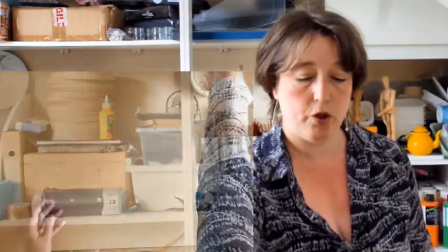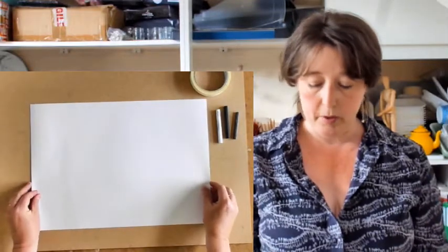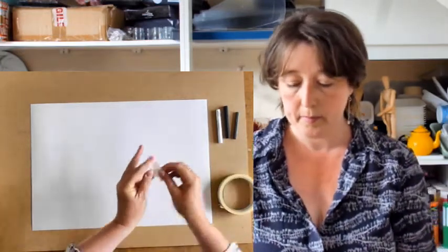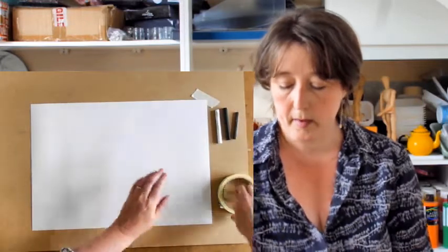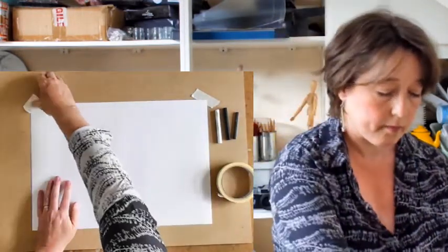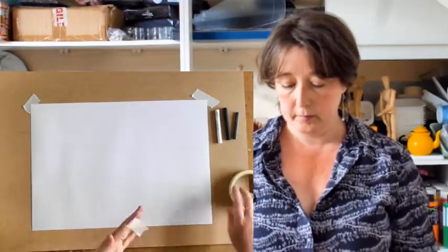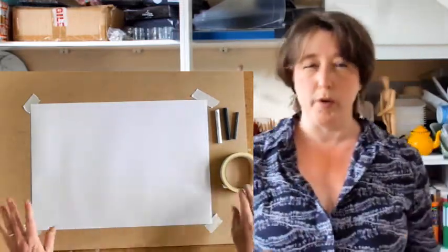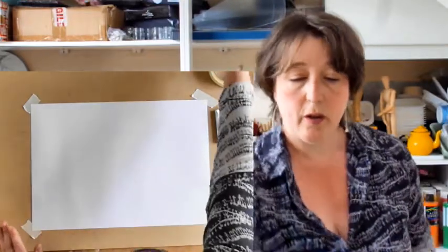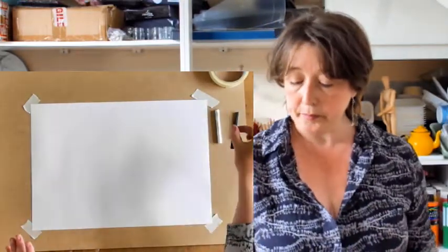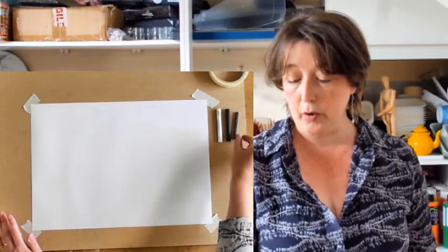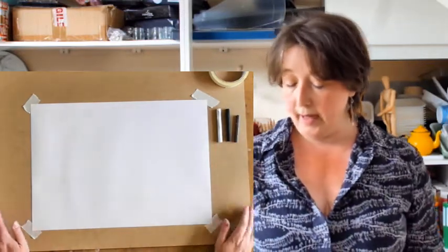I've got some A3 paper here. I'm going to tape it down to my board at the four corners because once I get started, I don't want the paper moving about. All I've got here is a stick of black compressed charcoal, a stick of white compressed charcoal, and a graphite stick.